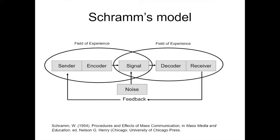SRAM's communication model accounts for something that happens to the signal, and that is noise. Noise in SRAM's model is anything that impacts the signal. That noise can certainly be auditory — airplanes flying overhead, the hum of an air conditioner, the buzzing of a fluorescent light. But in SRAM's model, communication can also be interrupted by noise that is not auditory. For example, the way that you feel could impact your ability to receive the signal — if you're hungry, tired, cold, or cranky. The noise can also be something within the environment: is the room too hot, too cold, too dirty, or does the room smell bad? All of these things can impact the signal.